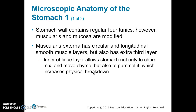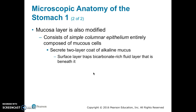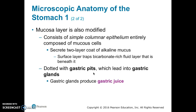The stomach wall contains the regular four tunics, but the muscularis and the mucosa are modified. The muscularis externa has circular and longitudinal smooth muscle layers, but in the stomach it also has an extra third layer — the inner oblique layer — which allows the stomach to not only churn, mix, and move the chyme, but also to pummel it, increasing physical breakdown. The mucosa consists of simple columnar epithelium entirely composed of mucous cells, which secrete a two-layer coat of alkaline mucus. The surface layer traps a bicarbonate-rich fluid layer beneath it.